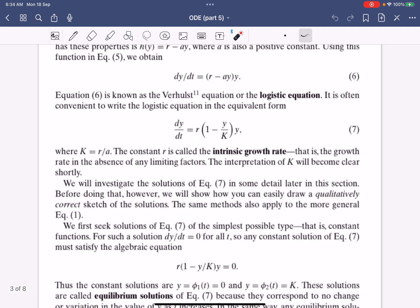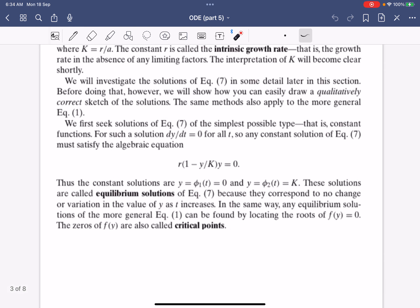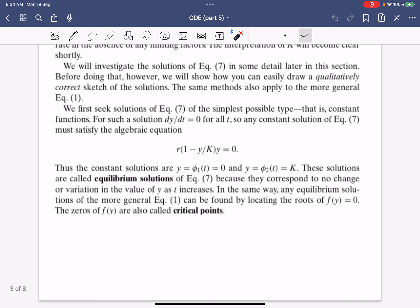It must satisfy that the rate of change equals zero, and this point we get is at y equals zero and y equals K. These are known as equilibrium solutions because there's no change in the value of y as t increases. These zeros are also known as the critical points.